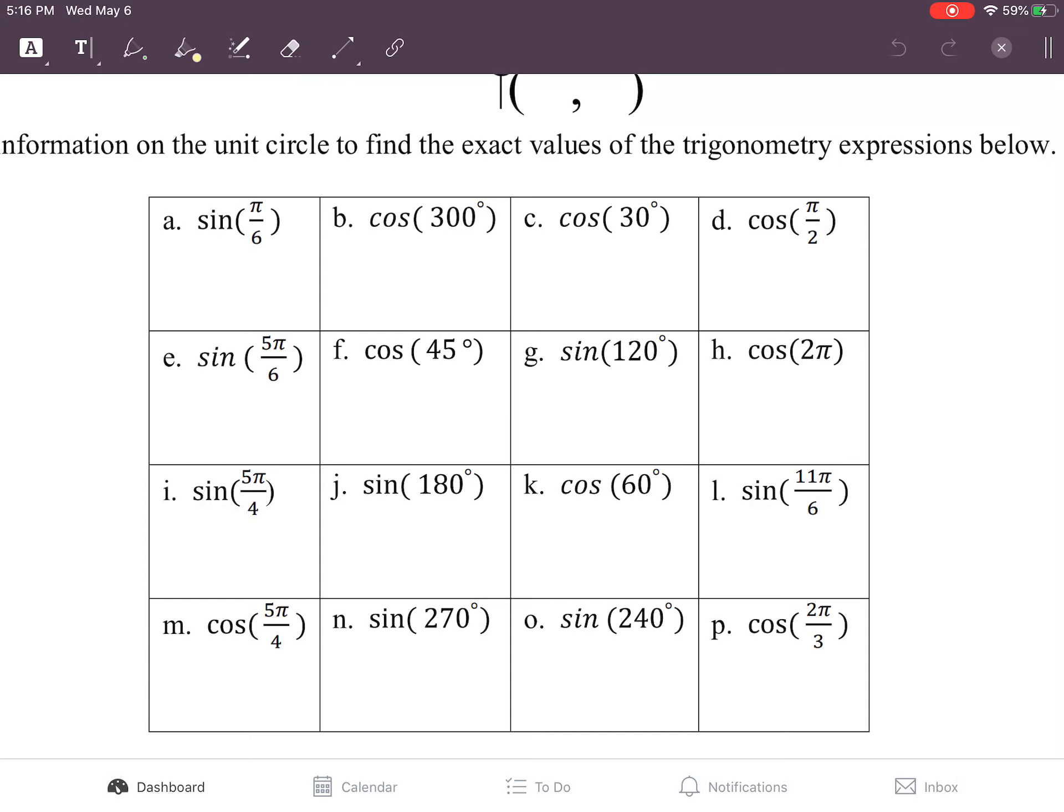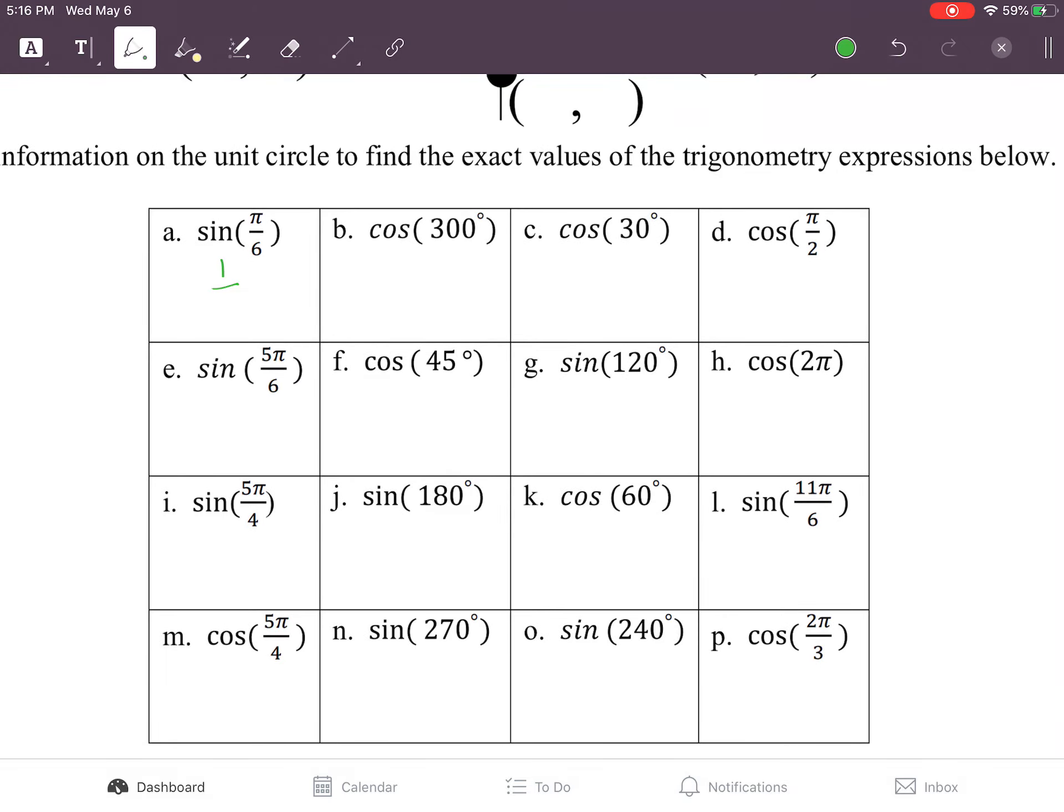So for example, at π over 6, you look at the unit circle, find π over 6. Since we're looking at sine, we're looking at the y value of the point at π over 6, which is 1 half. That's it, you're done. For cosine of 300, you find 300 degrees. Cosine is the x term. You look at what the point is for the x term. It's 1 half again.